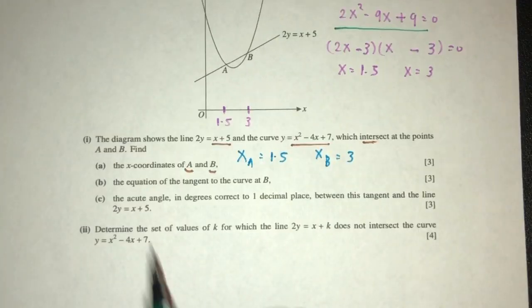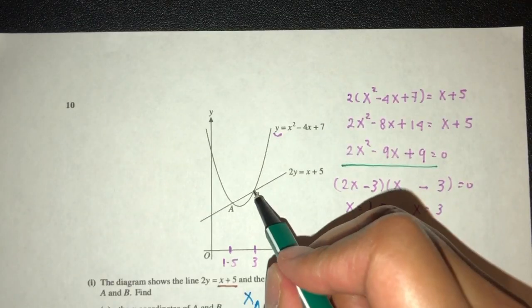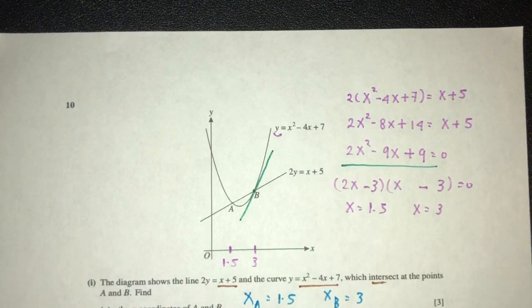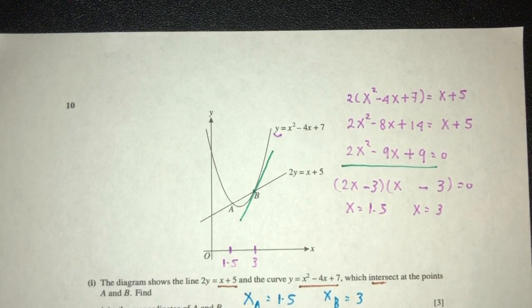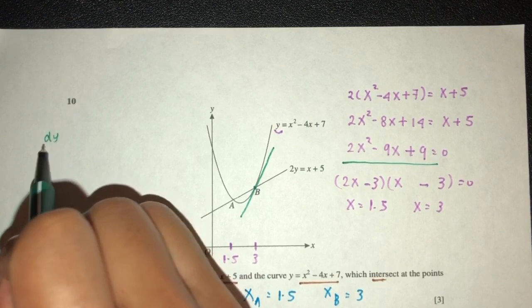Now, for point B, we have to find the equation of the tangent to the curve at B. So, we have to find the equation of the tangent at B. Now, we understand. To find the equation of tangent, which is a straight line, we must find the gradient of tangent, which is simply dy by dx.